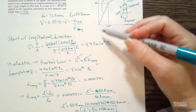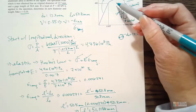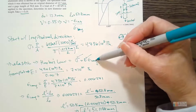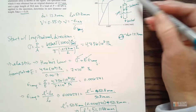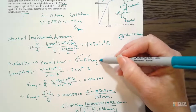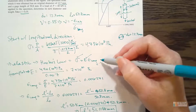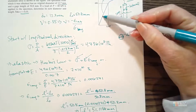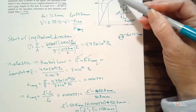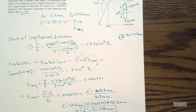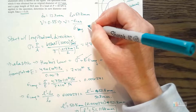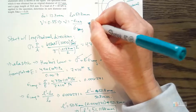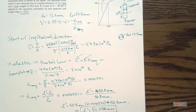We were able to find the new length by recognizing this is the elastic part of the curve, which allows us to use Hooke's Law. Once you go beyond the elastic portion into the plastic region, you can no longer use this law. Also key was that the slope of the stress-strain line gives us E.